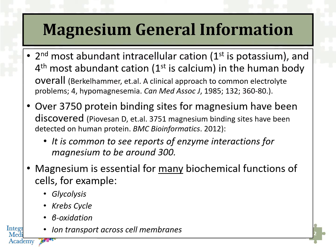Magnesium is a very important mineral with regards to our overall health and critically important for mitochondrial function. It's the second most abundant intracellular cation — the first actually being potassium — and the fourth most abundant cation overall in the human body. There are approximately 3,715 protein binding sites for magnesium that have been discovered so far. In many reports they talk about around 300, but it's clearly a lot more than that.